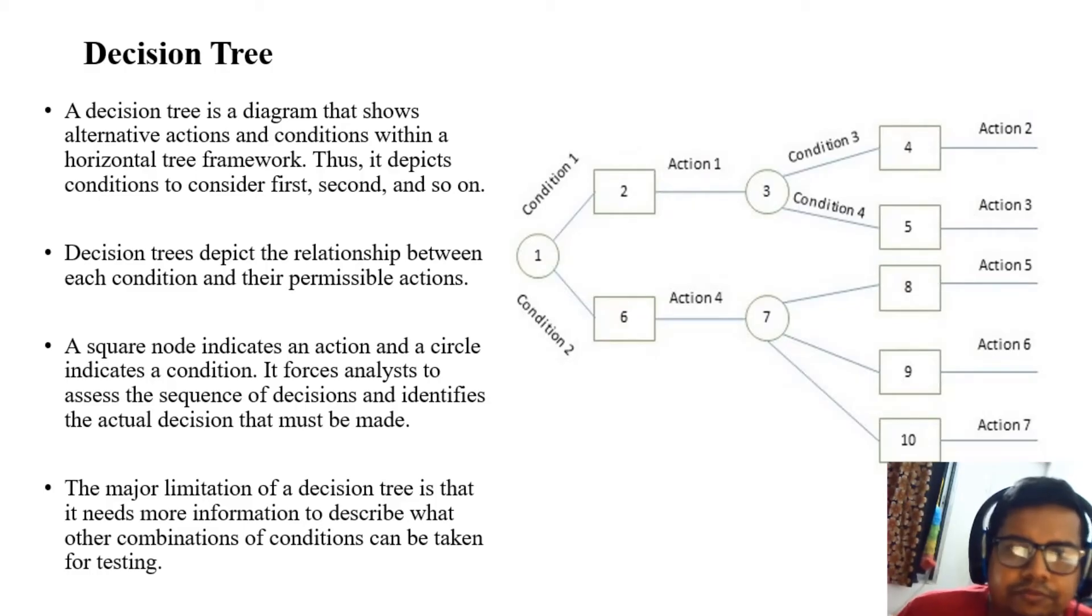Now decision tree. A decision tree is a diagram that shows alternative actions and conditions within a horizontal tree framework. It depicts conditions to consider first, second, and so on. Decision tree depicts the relationship between each condition and their permissible actions. The square node indicates the action and the circle the condition. A major limitation of the decision tree is that more information is required to describe what other combinations of conditions can be taken for testing.